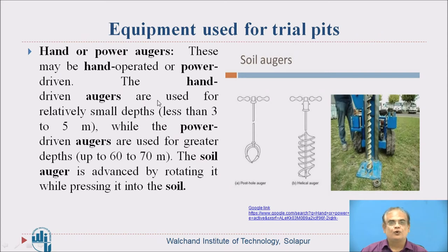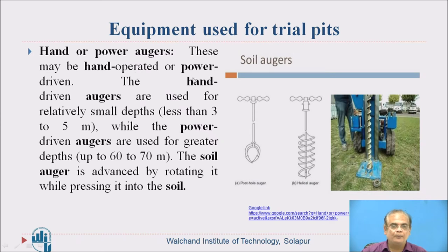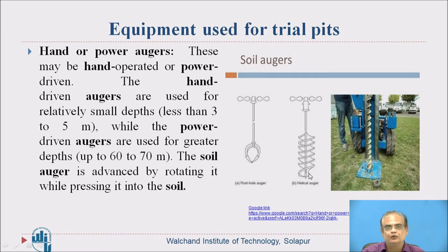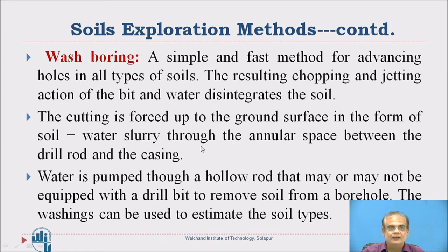The equipment used for taking trial pits are called augers — hand or power augers. Power augers are also called mechanical augers. Hand-operated augers are used for relatively smaller depths, say less than 3 to 5 meters. Power-driven augers are used for greater depths, up to 60 to 70 meters. In the photograph, you can see augers. They are advanced in soil by rotating while pressing into the soil.